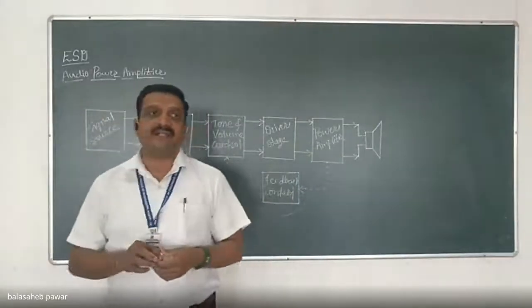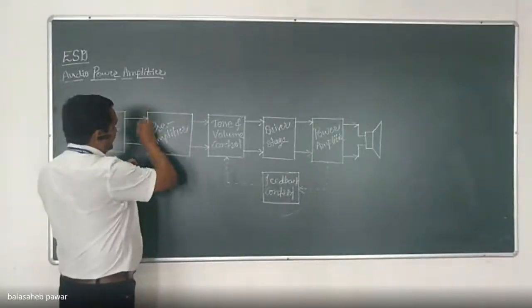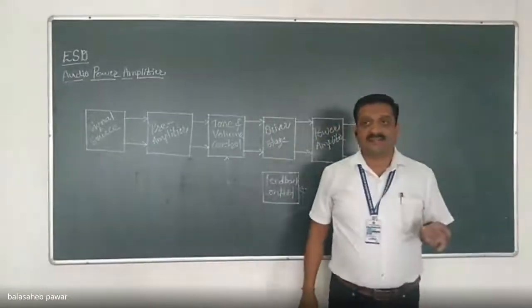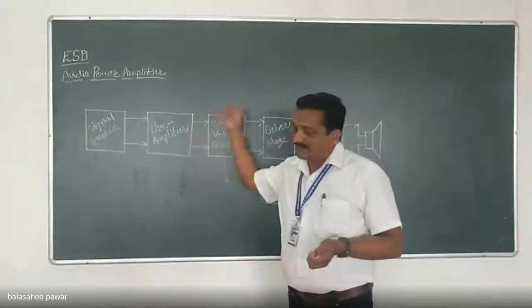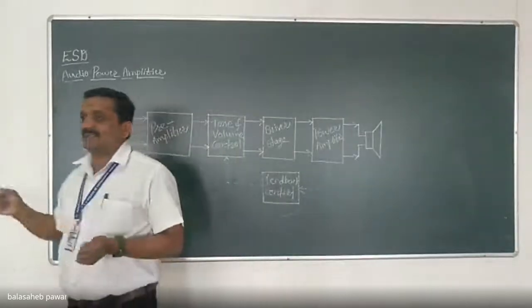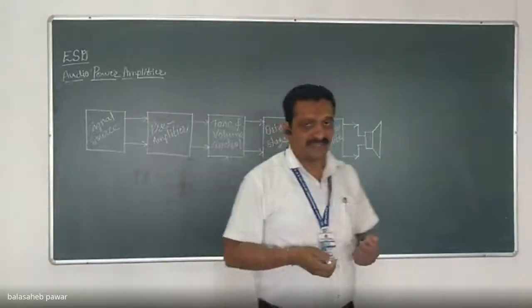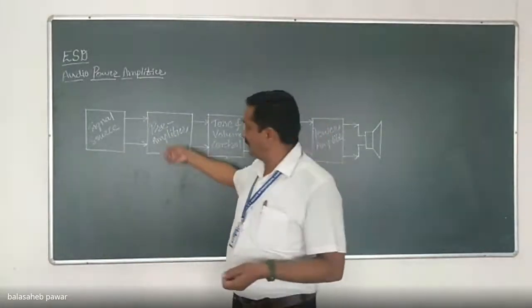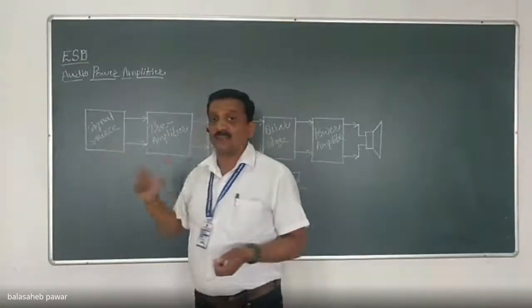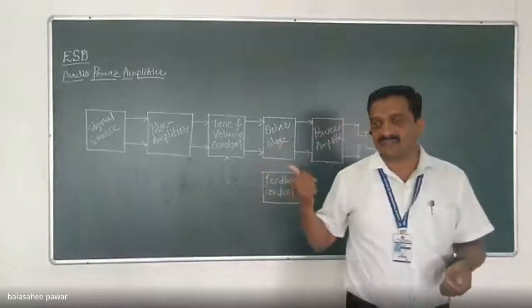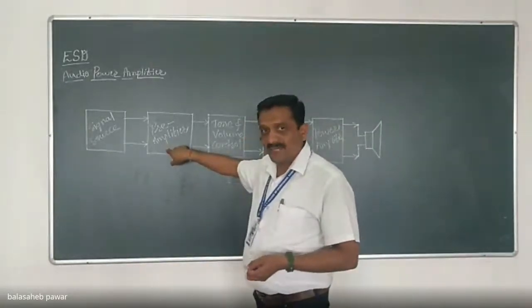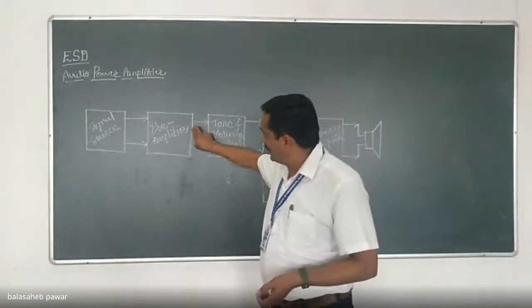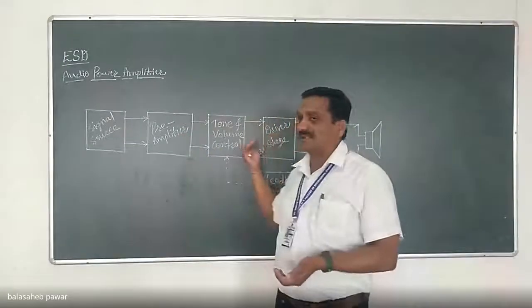For an ideal voltage amplifier like the pre-amplifier stage, input impedance should be as high as possible so that any signal source can deliver the signal without loading. If input impedance is poor, the signal source operates under loading condition. So the input impedance of the pre-amplifier should be as high as possible, and its output impedance should be as low as possible so that it can deliver maximum power to the next stage.